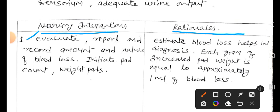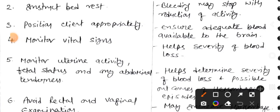The rationale for recording blood loss is to estimate blood loss and aid in diagnosis — each gram of increase in pad weight equals approximately one milliliter of blood loss. Intervention two: strict bed rest; rationale is that bleeding may stop with reduction of activity. Intervention three: position the client appropriately; rationale is to ensure adequate blood flow to the brain. Next, monitor vital signs.